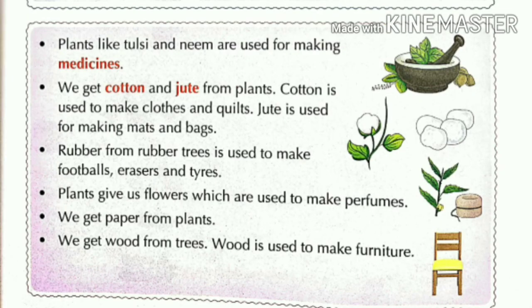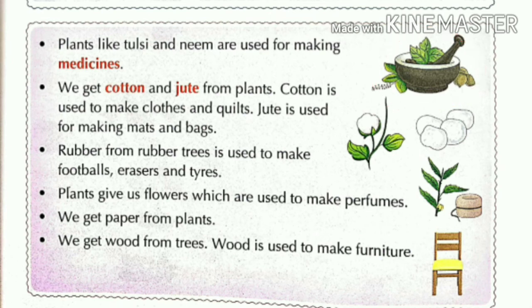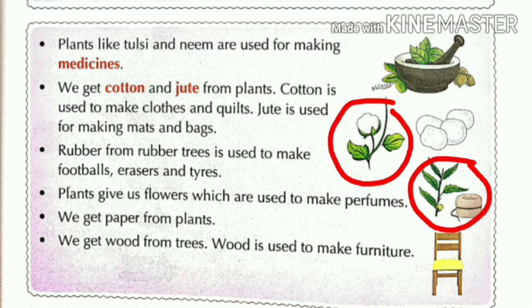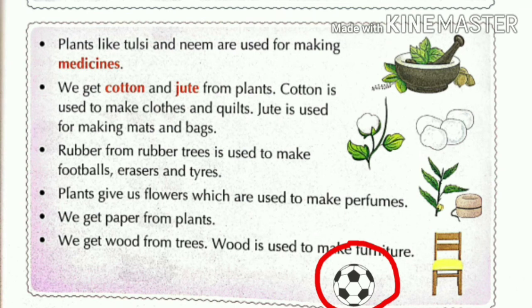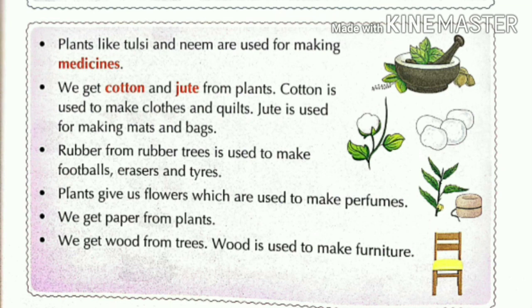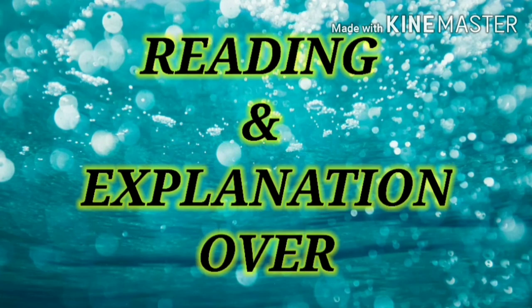There are some more uses of plants. Plants like tulsi and neem are used for making medicines. We get cotton and jute from plants. Cotton is used to make clothes and quilts. Jute is used for making mats and bags. Rubber from rubber trees is used to make footballs, erasers, and tires. Plants give us flowers which are used to make perfumes. We also get paper and wood from plants, and wood is used to make furniture.